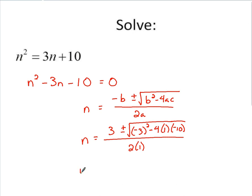n is going to equal 3 plus or minus, let's see how our discriminant works out here. You've got negative 3 squared, which is 9. A couple of negatives here. If we multiply that out, that's going to be a plus 40. So we're going to have 49 left as the discriminant. That's all over 2.